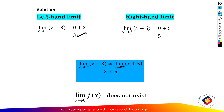Second, find the right hand limit of the function. The limit as x approaches 0 from the right of x plus 5. Substituting 0 into the function gives 0 plus 5, so the right hand limit equals 5.